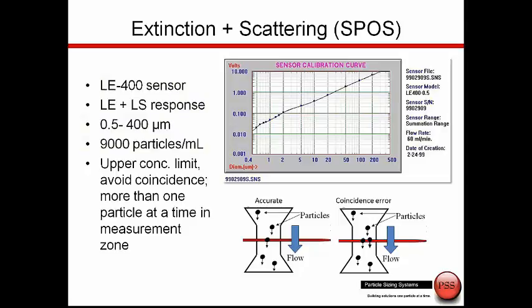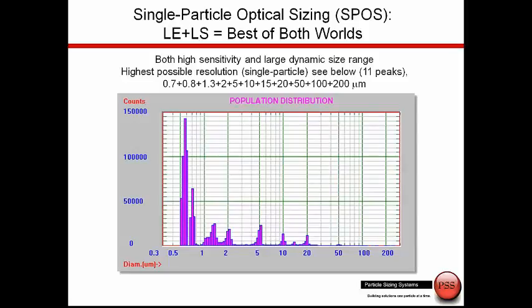The upper concentration limit is limited by the coincidence error, which is defined as when more than one particle at a time is present in the sensing zone. If we have more than one particle at a time in the sensing zone, as you see in the lower right, then those two particles are counted as one larger particle. This combination of light extinction and light scattering is the basis of the single-particle optical sizing technique. This gives us the best of both worlds to individually size and count particles across a wide dynamic range.